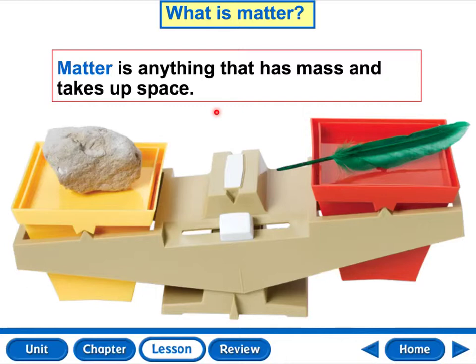One way to describe matter is by its properties. A property is a characteristic that you can observe. So characteristic and property, they're synonyms. They're kind of very interchangeable here. They mean almost the same thing. Properties can include things such as color, shape, and size. Those are your most popular properties of matter, but those aren't the only ones.